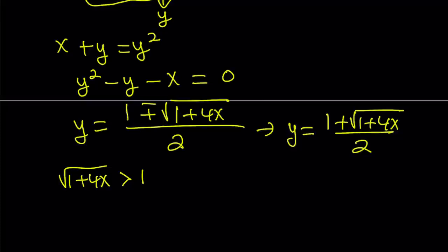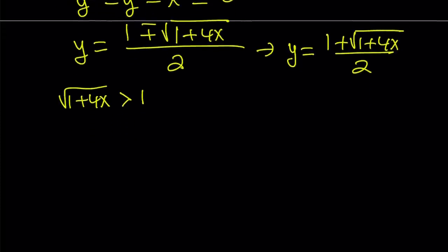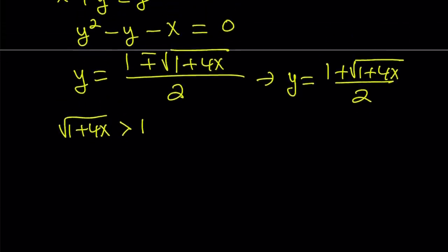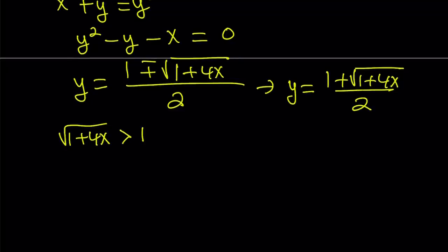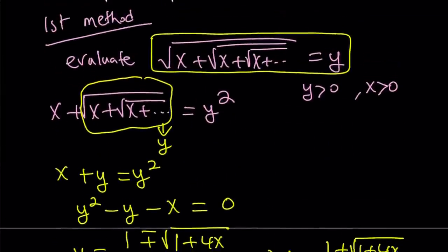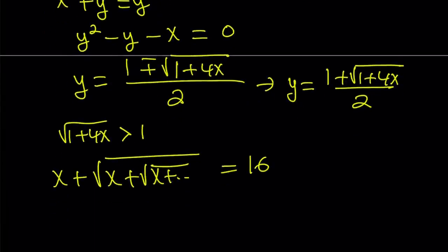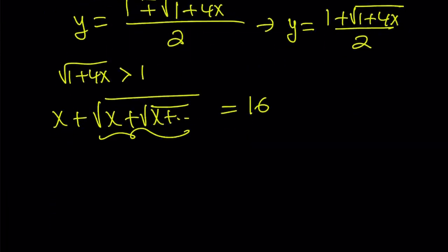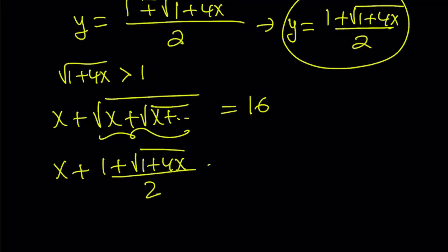Now, we know that y is equal to that. So we do have our expression. Let's take a look at our expression one more time. We have x plus the square root of x plus the square root of x plus dot dot dot is equal to 16. Now, we know that this part is equal to this radical expression right here. So we can write it as x plus the quantity 1 plus the square root of 1 plus 4x all over 2 is equal to 16.